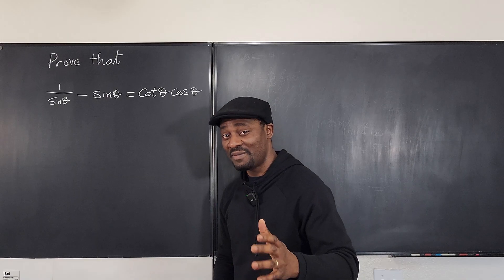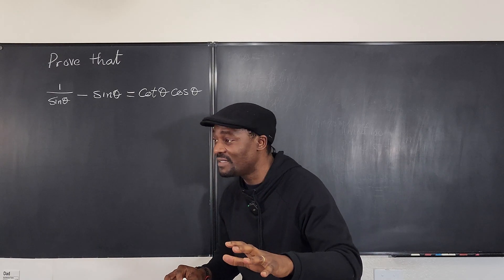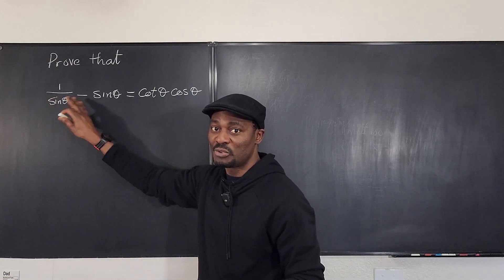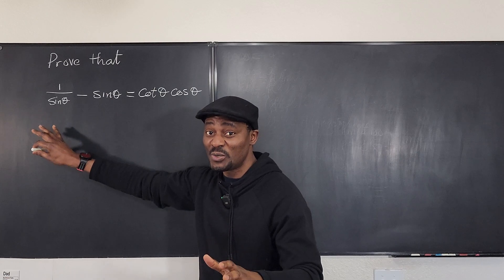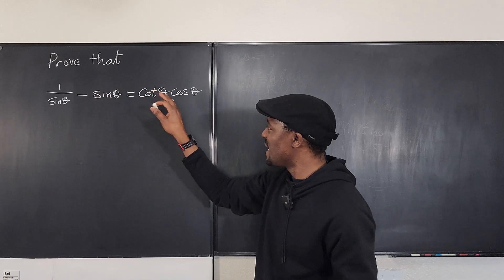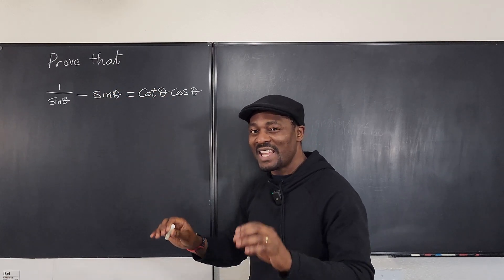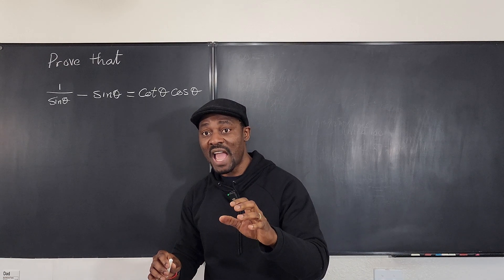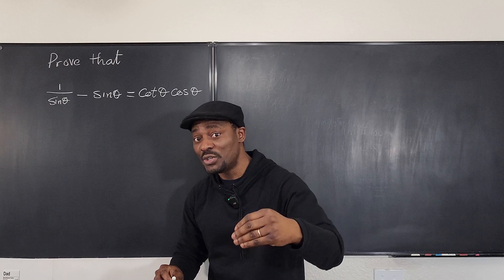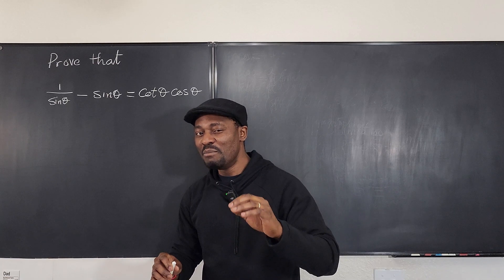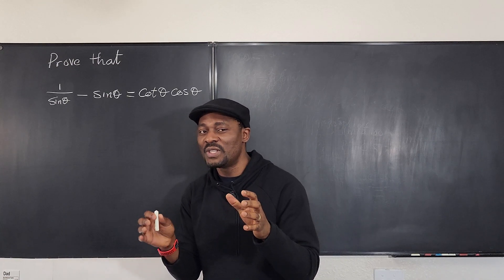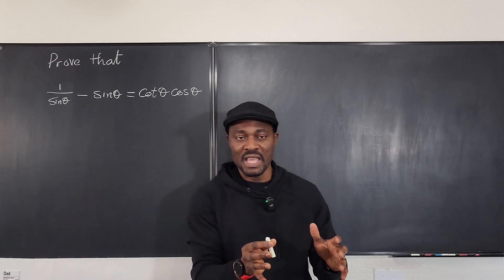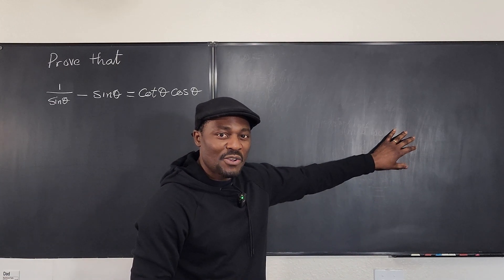The very first thing to know is that whenever you're going from an addition or subtraction of any two things and you're trying to make it a product, there has to be some identities you will use. The most common identity when dealing with converting addition or subtraction to multiplication are the Pythagorean identities.